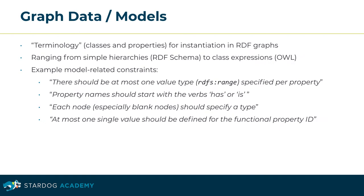Let's consider the final validation target. Graph models define the terminology of classes and properties for instantiation in RDF graphs. They range from simple hierarchies supported by RDF schema to complex class expressions in Web Ontology Language OWL. Example constraints targeting models may check for common mistakes and enforce at most one RDFS range to be specified per property, ensure compliance with naming conventions requiring property names to start with the verbs 'has' or 'is', or prohibit blank nodes in the instance data that don't specify a type. Additionally, you may implement constraints expressed by the model itself — for example, that at most one single value is defined for the functional property ID. This concludes the section analyzing validation targets.